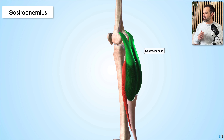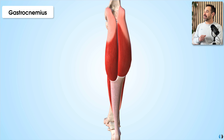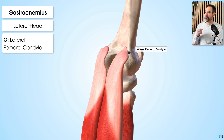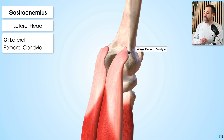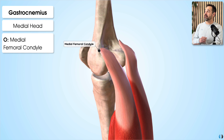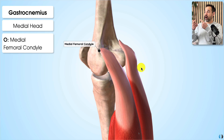The gastrocnemius has two heads: a lateral head and a medial head. The lateral head originates from the upper posterolateral surface of the lateral femoral condyle, while the medial head originates from the posterior surface of the medial femoral condyle. Importantly, both of these tendons cross the knee joint, running from the femur over the knee.